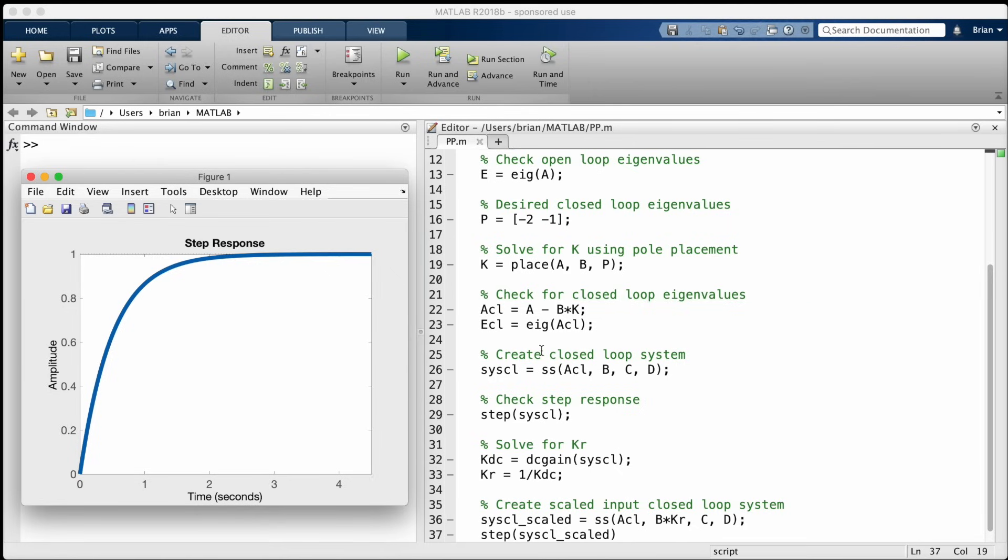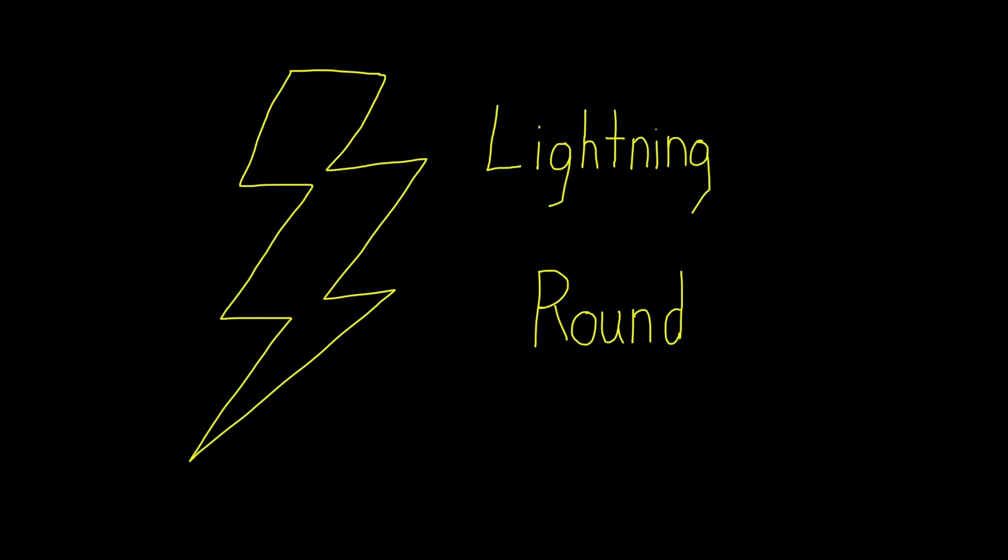And that's pretty much what there is to basic pole placement. We feed back every state variable and multiply them by a gain matrix in such a way that the closed loop eigenvalues are what we want, and then we scale the input to make the steady state response what we want. Of course, there's more to pole placement than what I could cover in this 12 minute video. And I don't want to drag this on too long, but I also don't want to leave this video without addressing a few more interesting things for you to consider. So in the interest of time, let's blast through these final thoughts, lightning round style. Are you ready? Let's go.